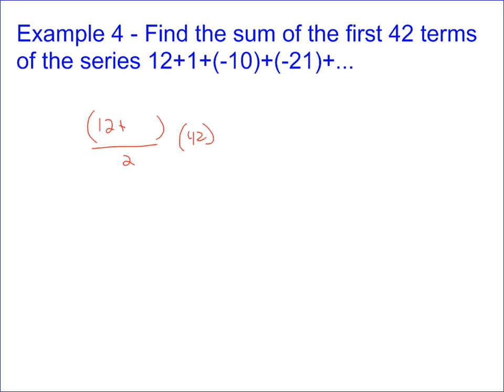We use our algebraic formula. This time, I'm subtracting 11, so it's going to be a negative 11 times x. Remember, x is always 1 less than the number of terms, so we've got to do 41 times negative 11 instead of 42.